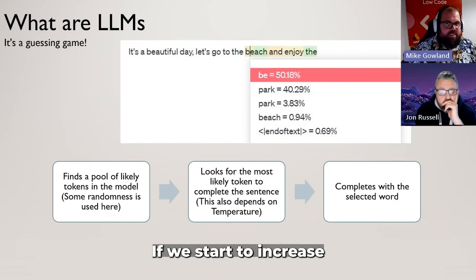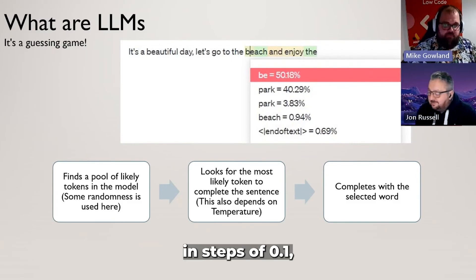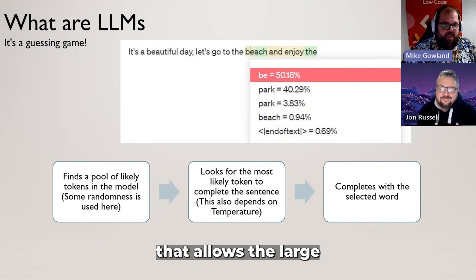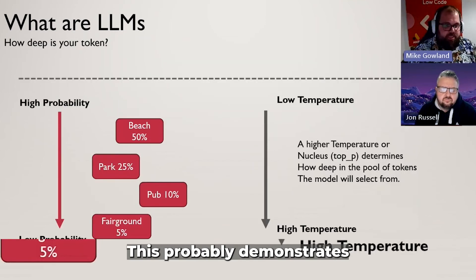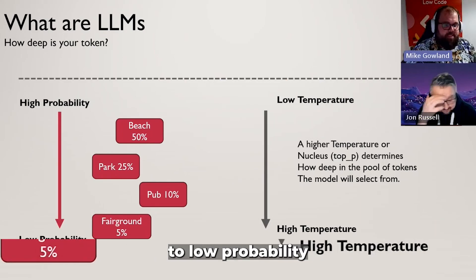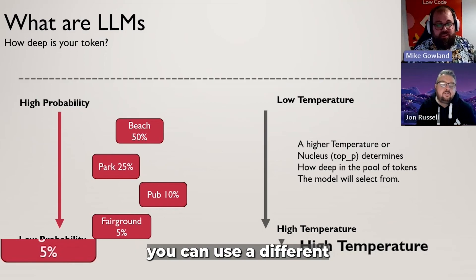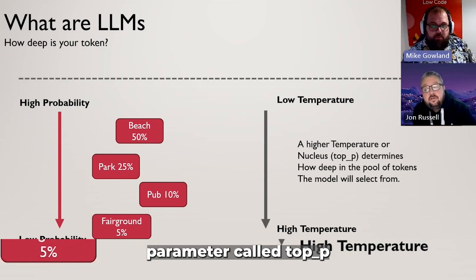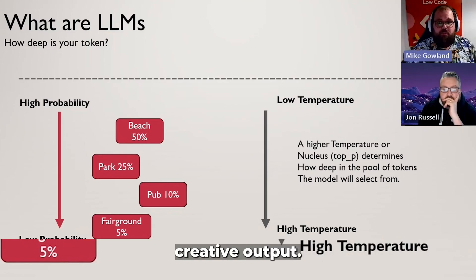If we start to increase that temperature — with OpenAI that goes from zero to one in steps of 0.1 — as you start to increase that, it allows the large language model to start to dive down into that pool of tokens. You've got a scale of high probability to low probability with your different tokens, and your temperature — or in some cases a different parameter called top P, which is your nucleus — as you increase that, it allows your large language model to give you more creative output.